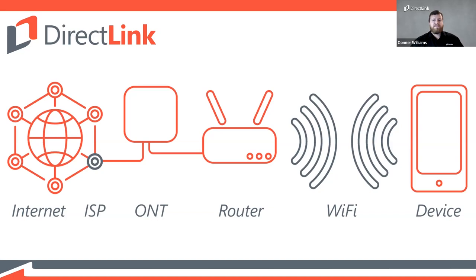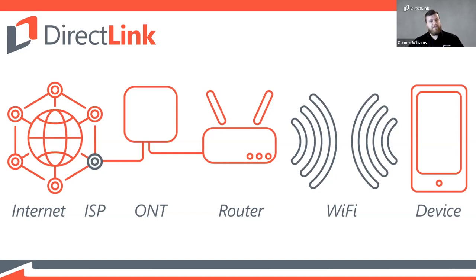Once the signal reaches the ONT on your house, the beams of light are converted into electrical signals and sent to your router through ethernet cabling running through your walls. The router then sends those signals to your devices either through Wi-Fi or through a wired connection.